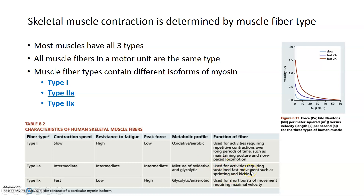Type 2 fibers, because they generate more force and contract more quickly, are used for short bursts of movement — quick movements as well as movements requiring maximum force. It's beneficial for a muscle to have all three types, so that every muscle can respond in a slow, maintenance way or in a quick, fast, forceful way. That's why a muscle as an organ wants all these different fiber types within it, so it can respond differently in different situations.